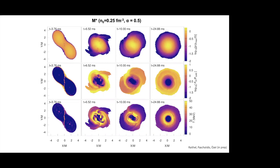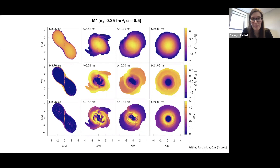Question: For different m-star parameters, have you looked at the dependence on whether the remnant forms a differentially supported or long-lived neutron star? Answer: That's a good question and is work I'm planning to continue over the next few years here. One of the questions I'm planning to look into is whether we can identify a trend in how long the remnant can be supported based on the m-star parameters. We haven't looked into that yet, and to my knowledge no one else has either.